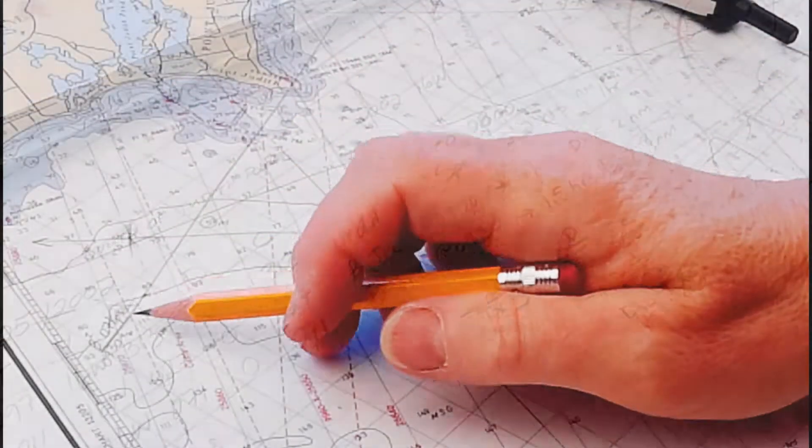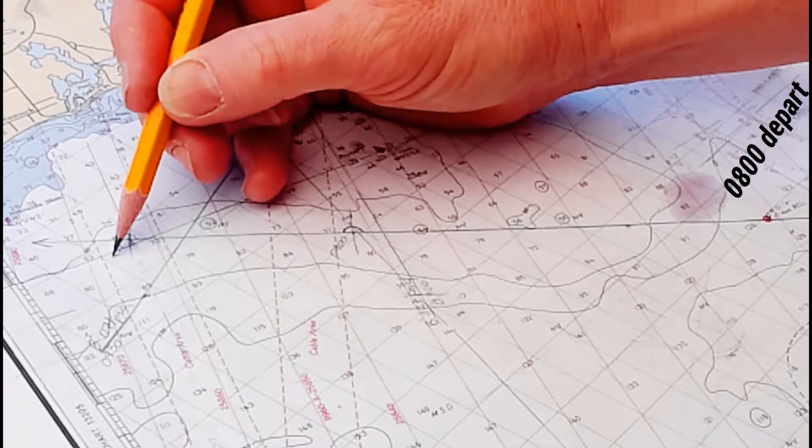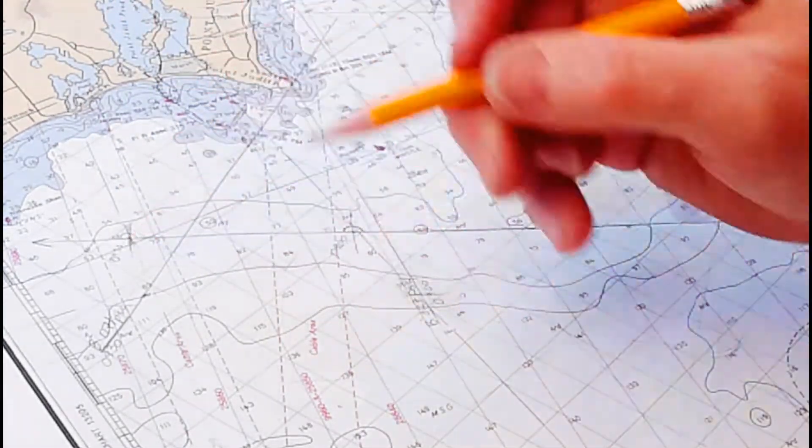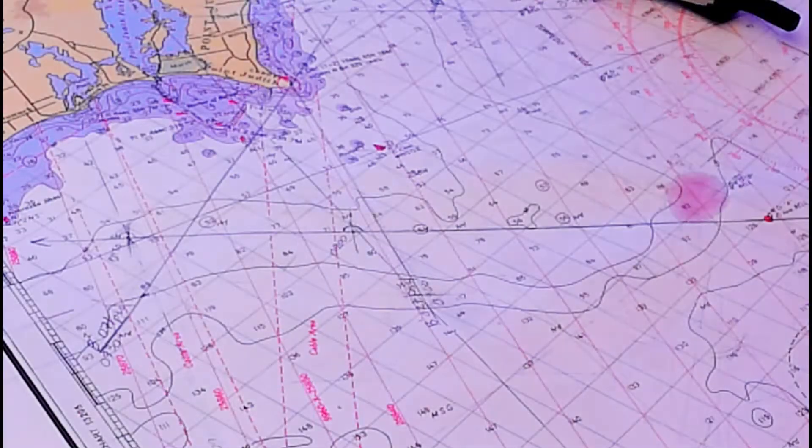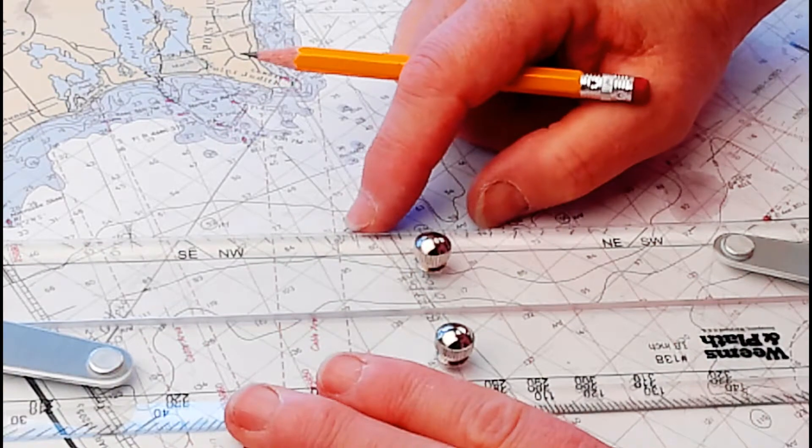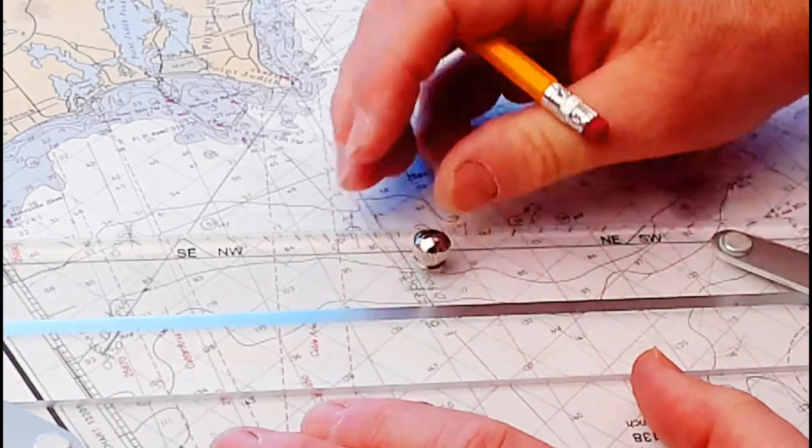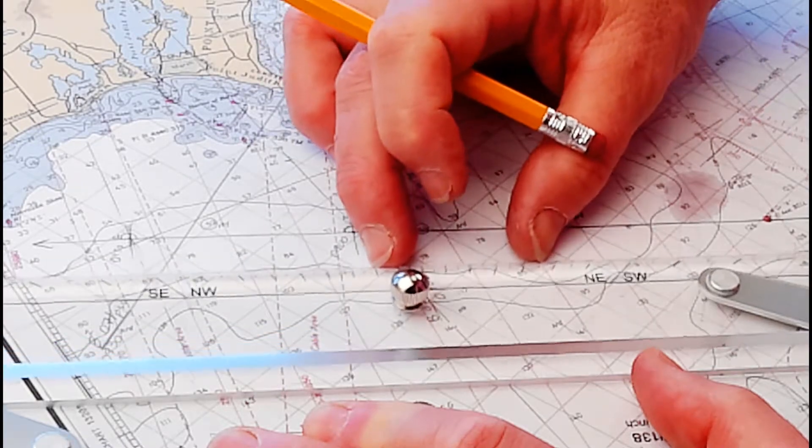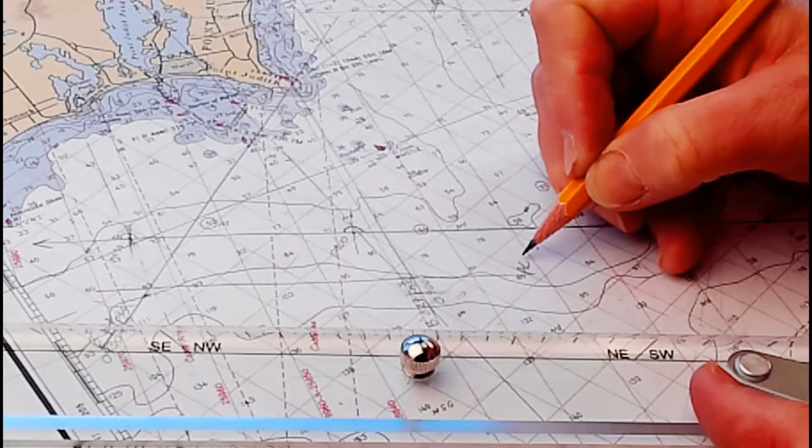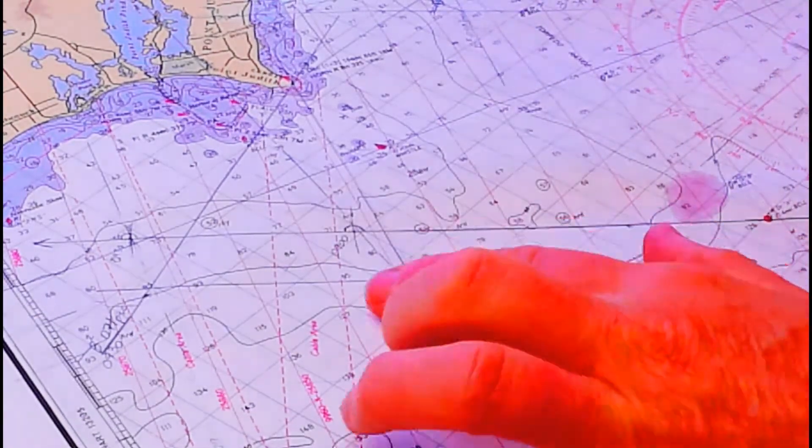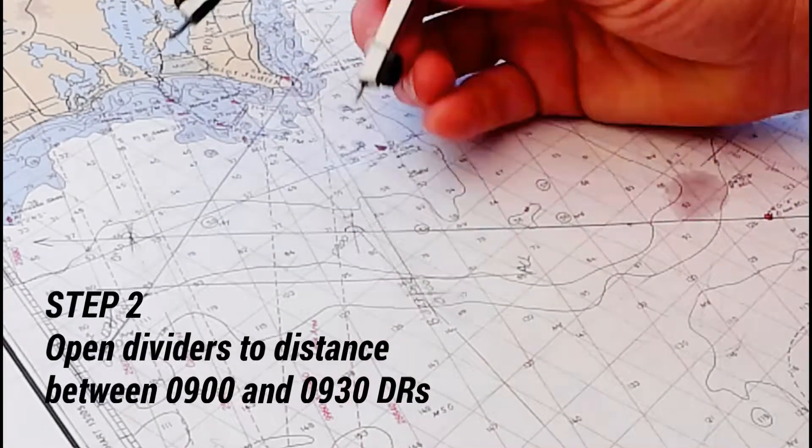Now we have the bearing at 0930, the bearing at 0900, and our DR positions. You know you end up at 0930 somewhere along this line, but you have to figure out where and how. We take what's called the average course line. Line up with your course and move it slightly off the course line so it crosses your two bearing lines. This is my average course line.